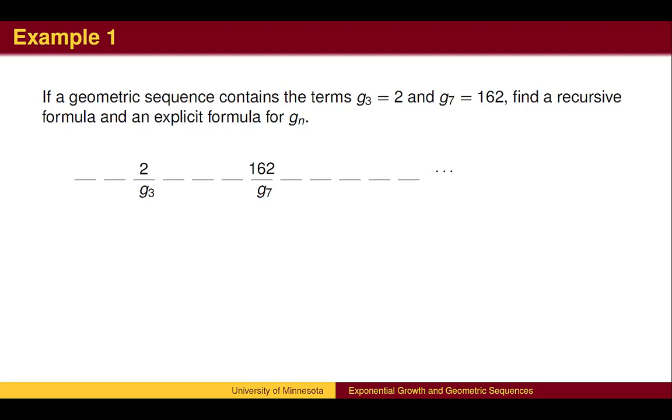Let's find formulas for this geometric sequence. g sub 3 equals 2, and g sub 7 equals 162. 162 divided by 2 is 81, so we accomplish a multiplication by 81 in 4 steps. In order to find the common ratio, we need to find a number we can multiply by itself 4 times to get 81. In other words, we need to find the fourth root of 81, which is 3.